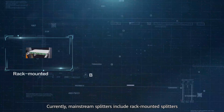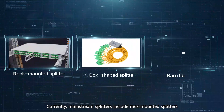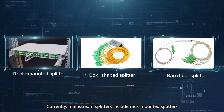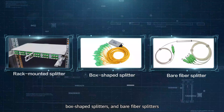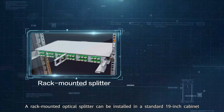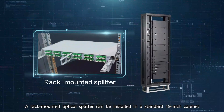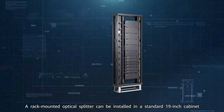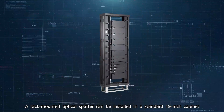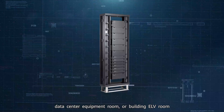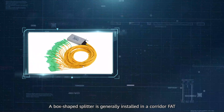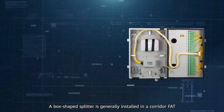Common even splitters have various split ratios. A 2N splitter is used when type B link protection is required. Currently, mainstream splitters include rack-mounted splitters, box-shaped splitters, and bare fiber splitters. A rack-mounted optical splitter can be installed in a standard 19-inch cabinet, data center equipment room, or building ELV room. A box-shaped splitter is generally installed in a corridor FAT.